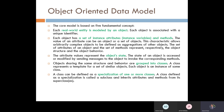A class is a collection of similar types of objects, and that makes the group of classes. For example, we have a class fruit and a class vegetable. All vegetables will come under the class vegetable, and all fruits will come under the category of the fruit class.